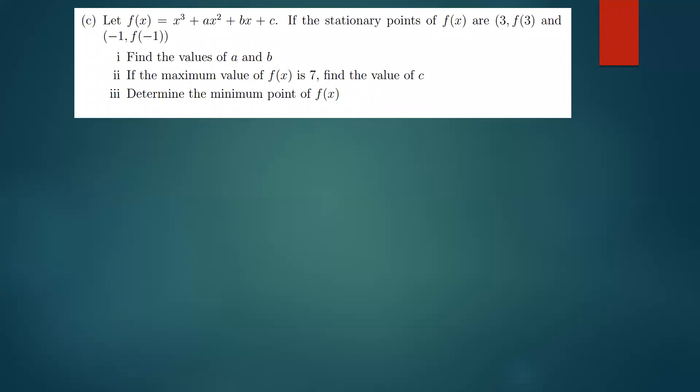This is a straightforward question: find the values of a and b. Let f(x) = x³ + ax² + bx + c. The stationary points of f(x) are at (3, f(3)) and (-1, f(-1)). Part one asks for values of a and b. Part two says if the maximum value of f(x) is 7, find c and determine the maximum point. These questions are simple and straightforward.